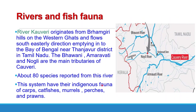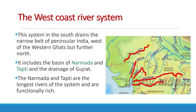River Kaveri is a large perennial river of South India, originating from Brahmagiri Hills on the Western Ghats, flowing in a southeasterly direction and emptying into the Bay of Bengal near Tanjore district in Tamil Nadu. The Bhavani, Amravati, and Noyil rivers are its tributaries. A large Mettur Dam has been constructed on the Kaveri. About 80 species of fishes are reported from this river, including carps like Tor putitora, Barbus carnaticus, Labeo kontius, Cirrhinus reba; catfishes like Mystus seenghala, Mystus spora, Wallago attu, Pangasius pangasius; and exotic fishes like Cirrhinus mrigala and Cyprinus carpio.